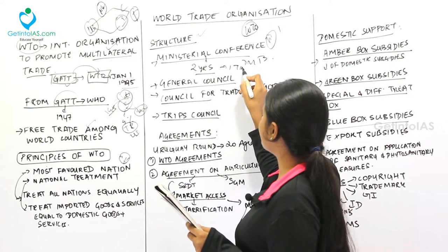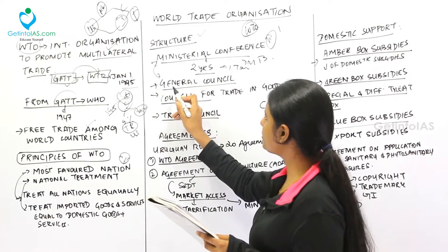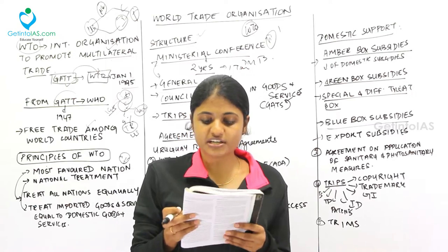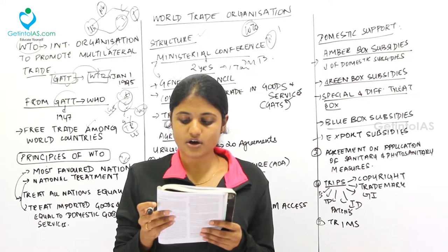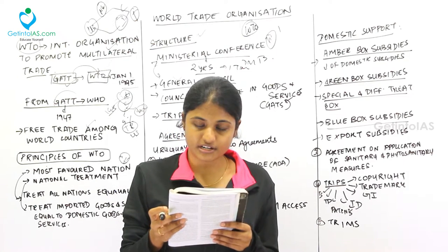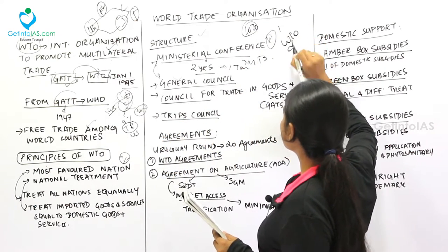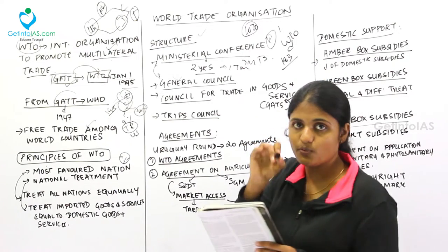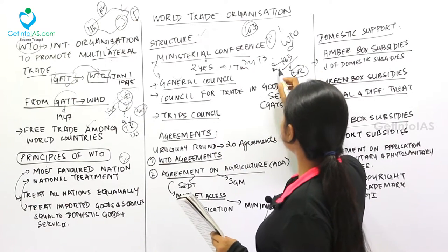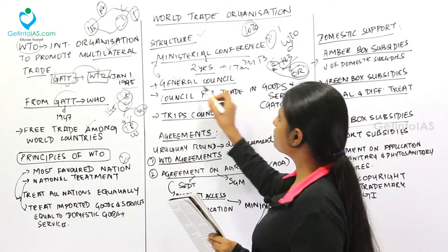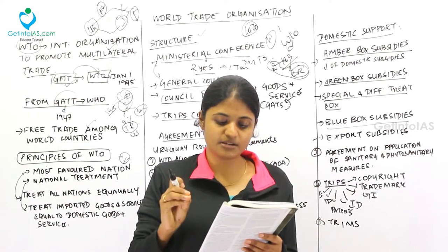After the Ministerial Conference, the next important body is the General Council, which functions under the Ministerial Conference. Ambassadors or other representatives appointed by member countries constitute this council. With 183 member countries, there are 183 ambassadors or representatives, and all of them together form the General Council.